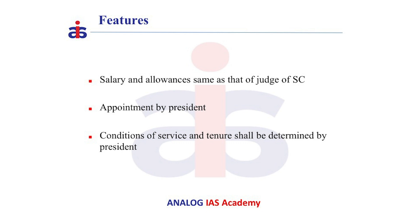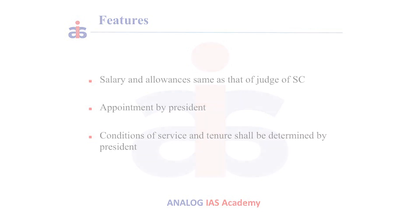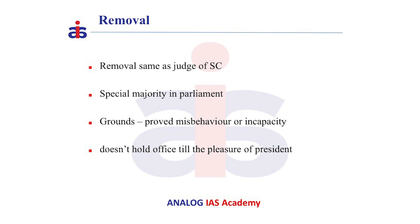The appointment of the Chief Election Commissioner and other Election Commissioners shall be made by the president. He cannot be removed from office except in the same manner and on the same grounds as a judge of the Supreme Court — that is, by the president on the basis of a resolution passed by both houses of parliament with special majority on the grounds of proved misbehavior or incapacity.